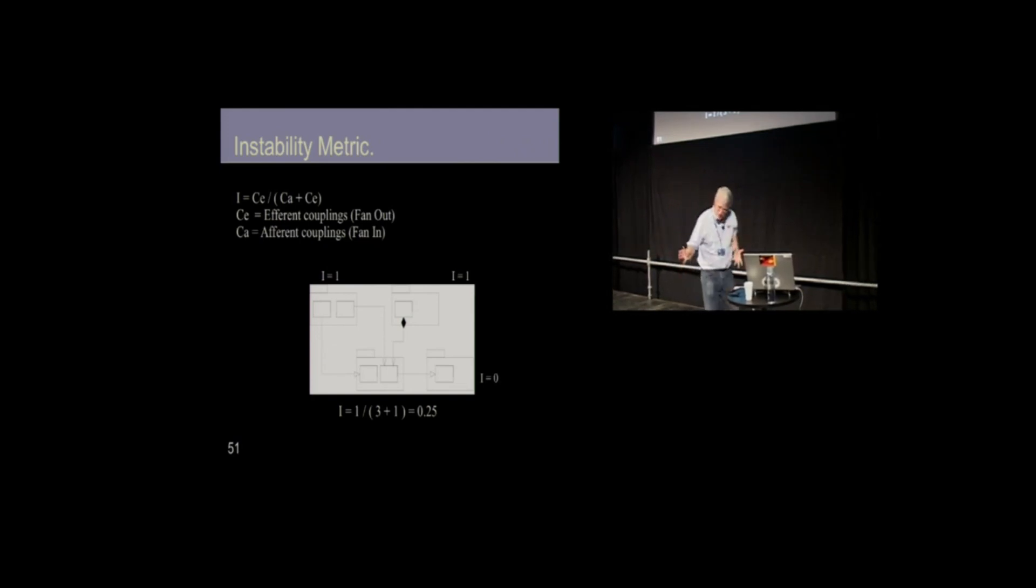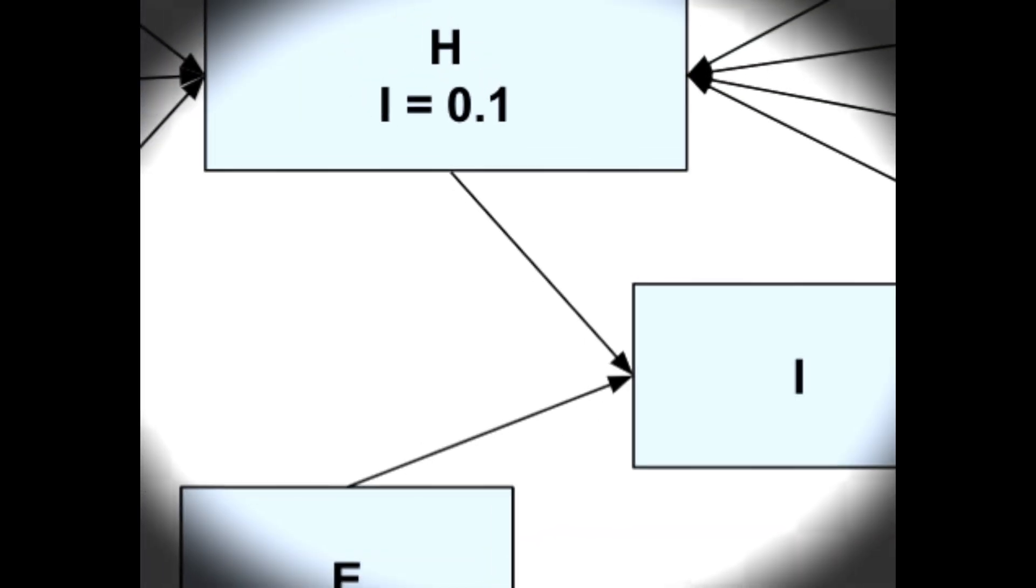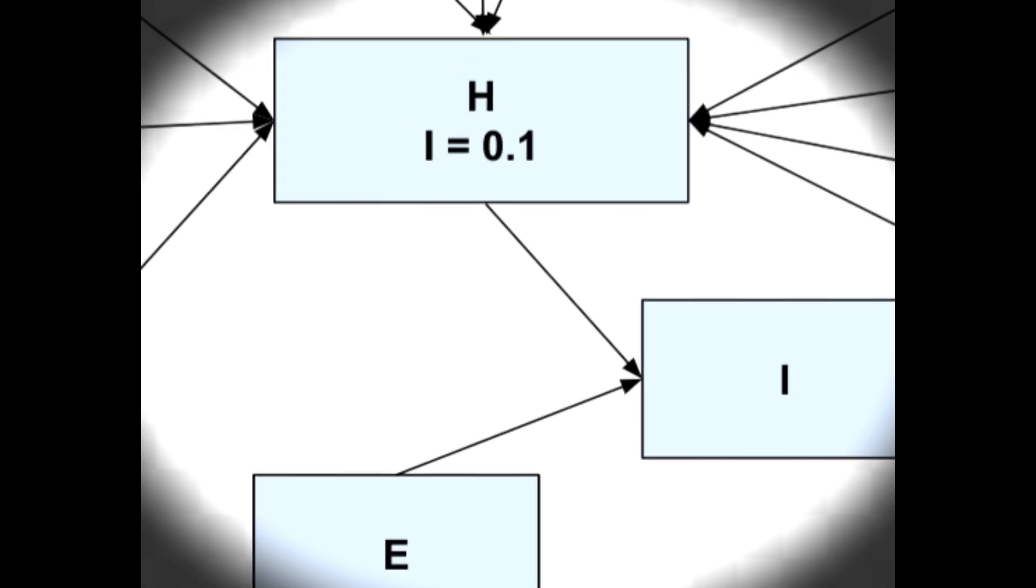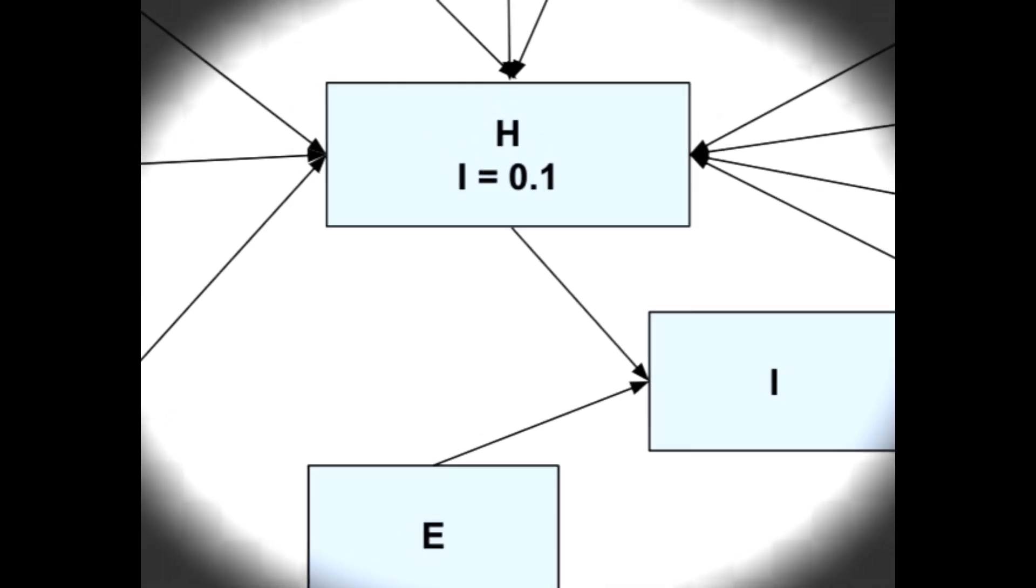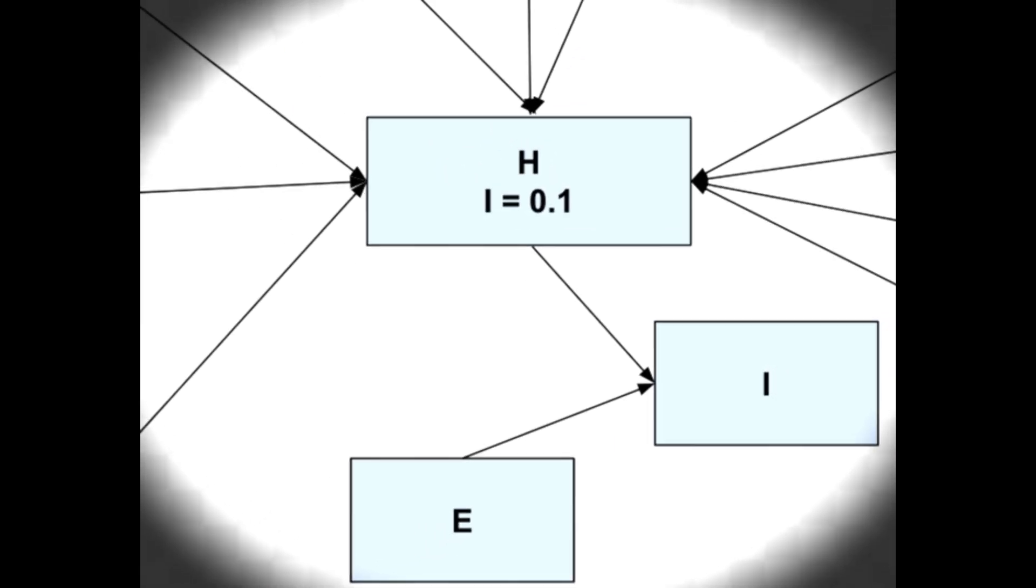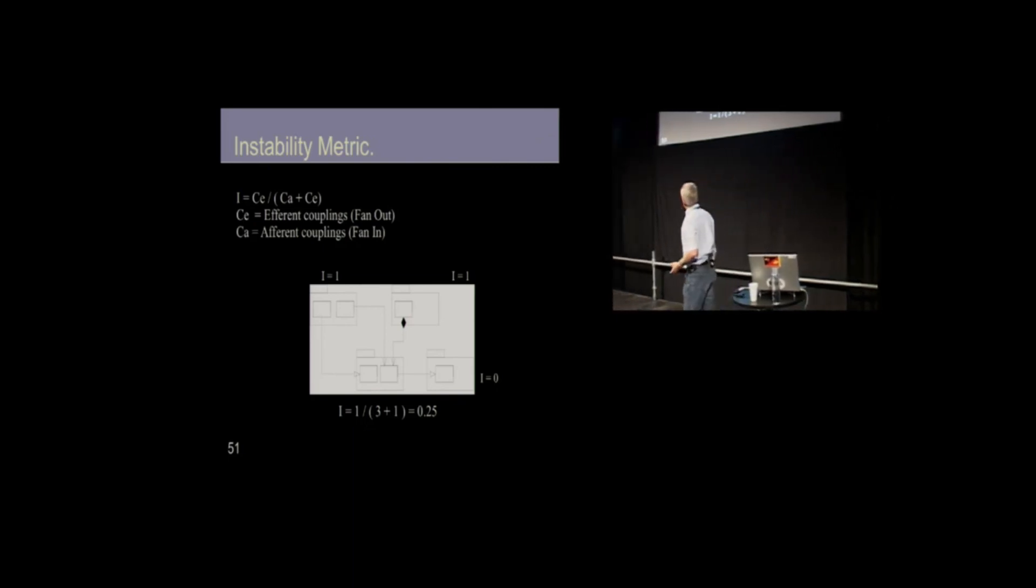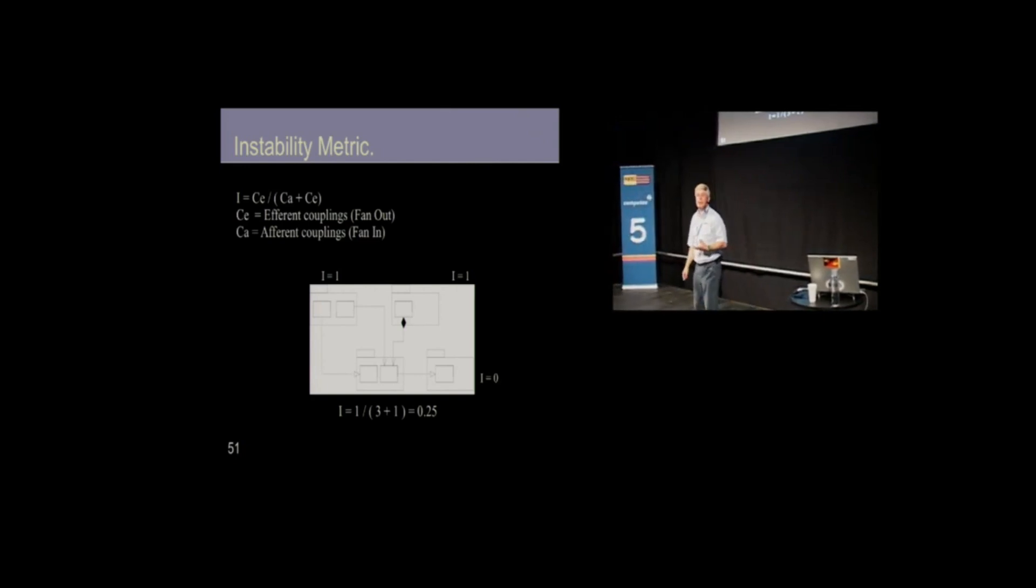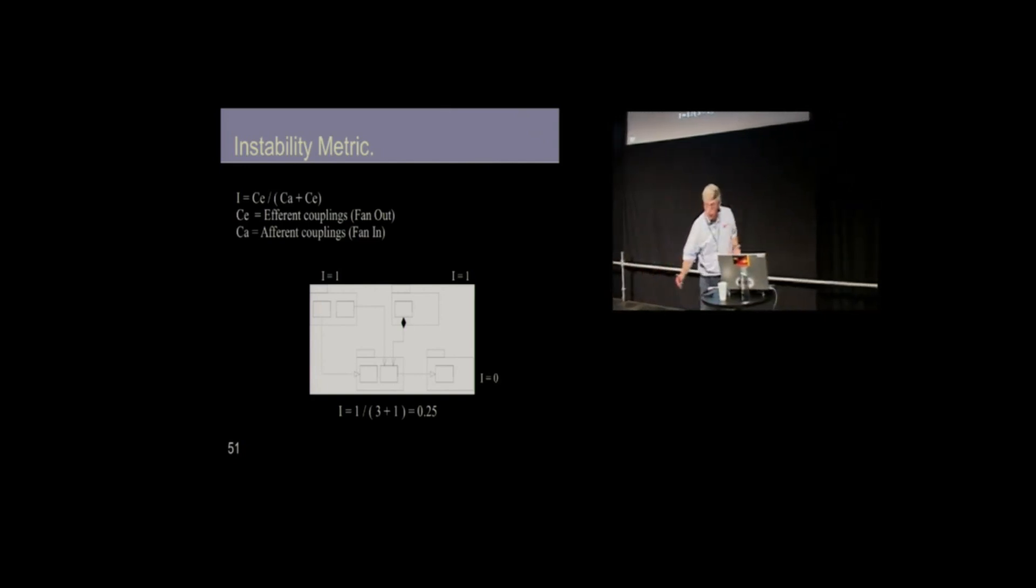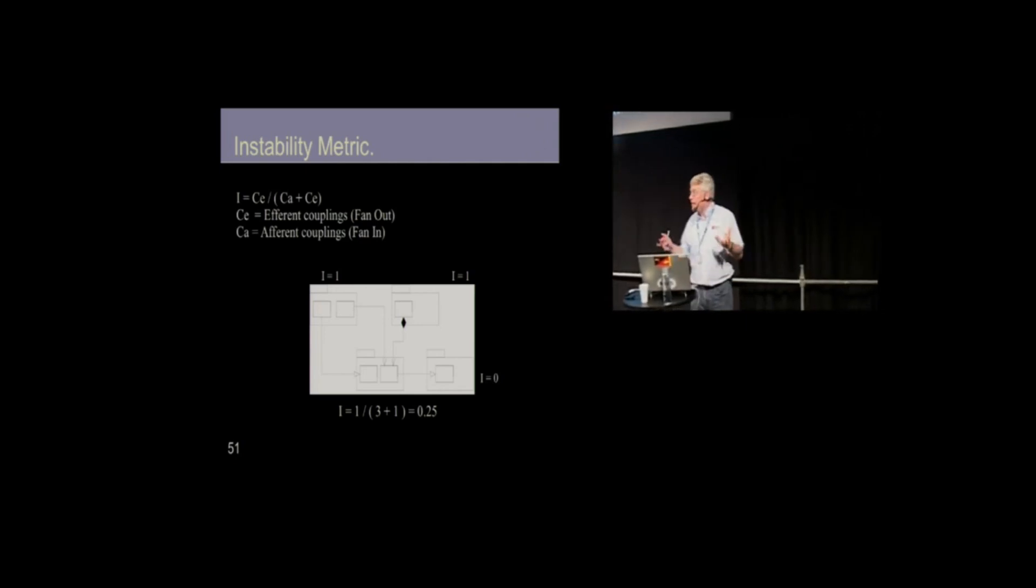What we want to do instead is split out a new component. Whatever it is that H wanted to depend upon, we need to pull out an interface so that H can depend on an interface and EZ can implement the interface. They'll both depend on the interface. Nobody will depend upon EZ and make EZ hard to change. That's using again the dependency inversion principle to keep these metrics in line.